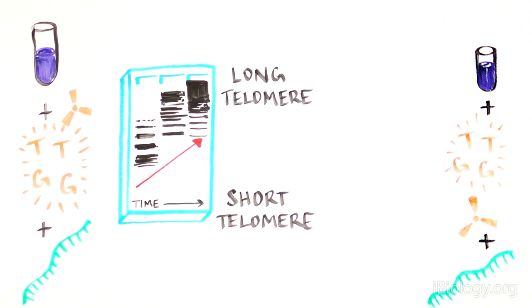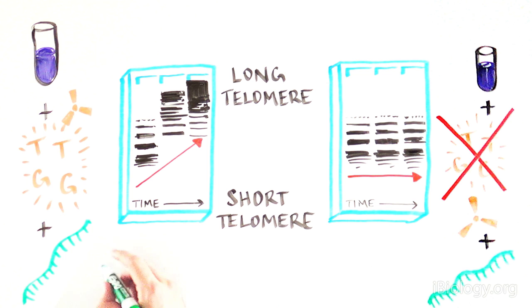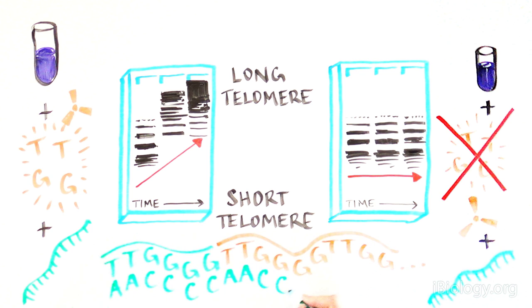However, if either of the nucleotides were missing, telomeres couldn't be produced. The newly formed, radioactively labeled telomere was being added to the single-stranded template, and it consisted of the same conserved sequence of TTGGGG over and over again.